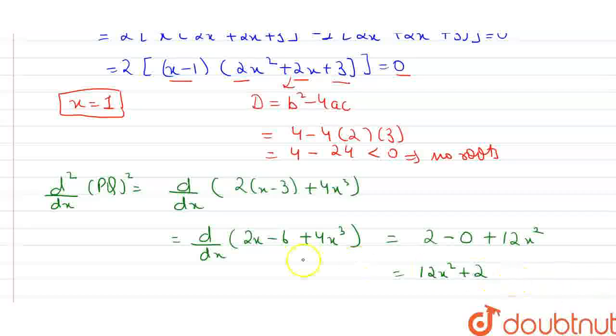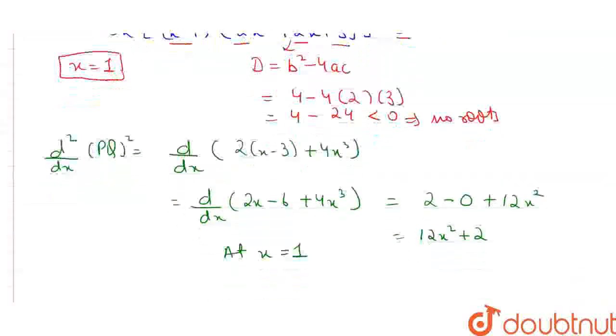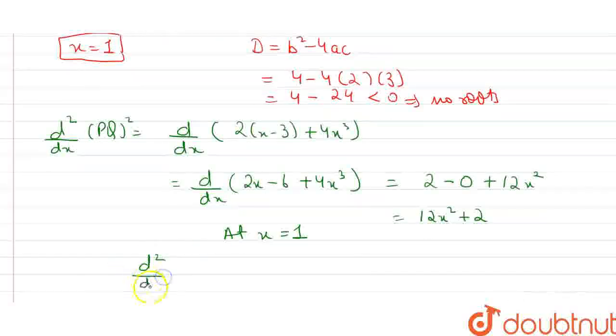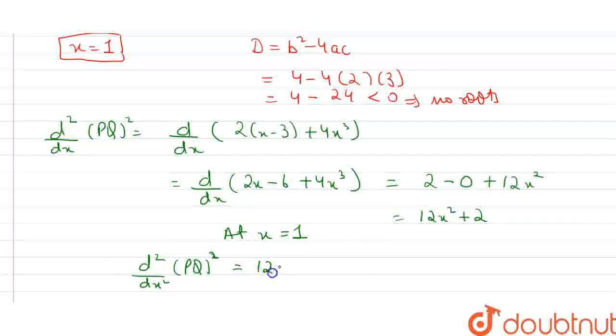So at x equals 1, our d2 upon dx square of PQ square is equal to 12 plus 2 that is equal to 14, greater than 0. So it is greater than 0 so it will surely give us minima. This is the rule of maximum minima: if double differentiation is greater than 0 then the point will give us minima. So x equals 1 is our minimum value for this function.